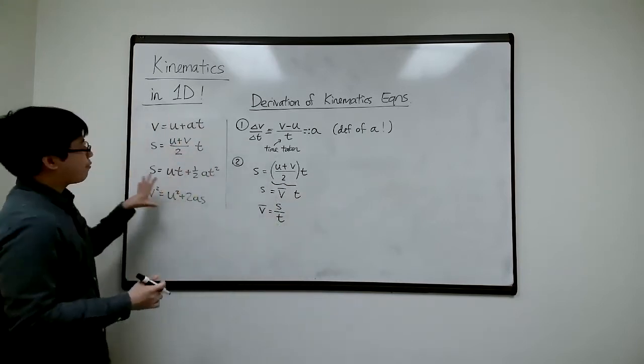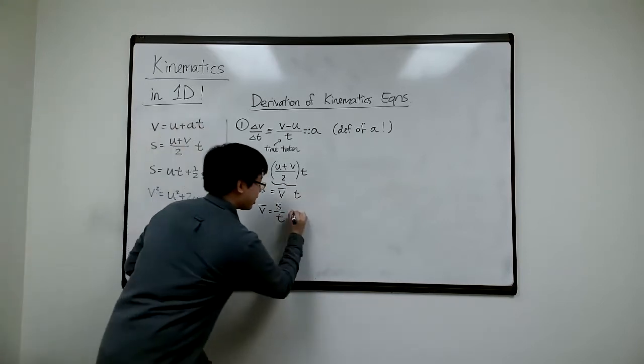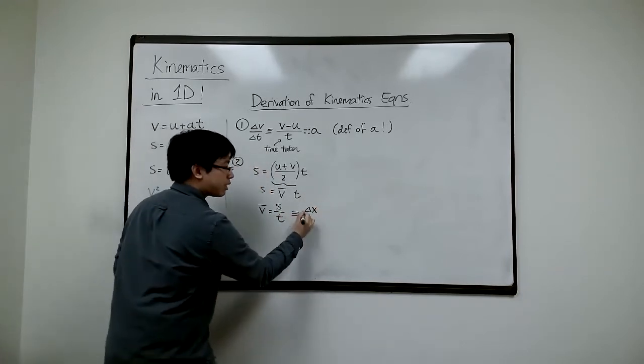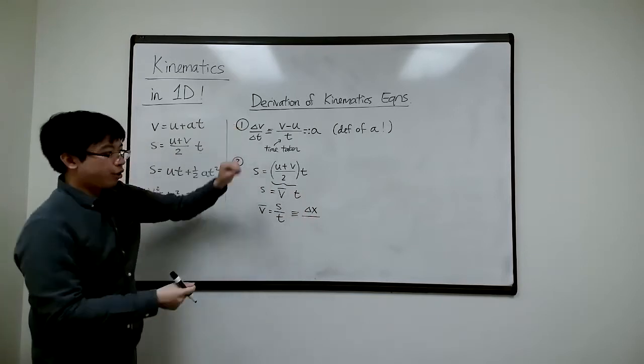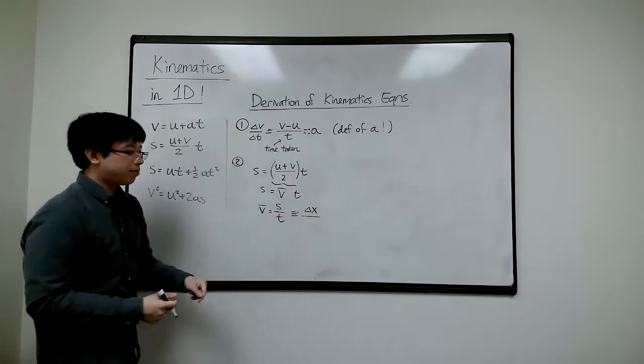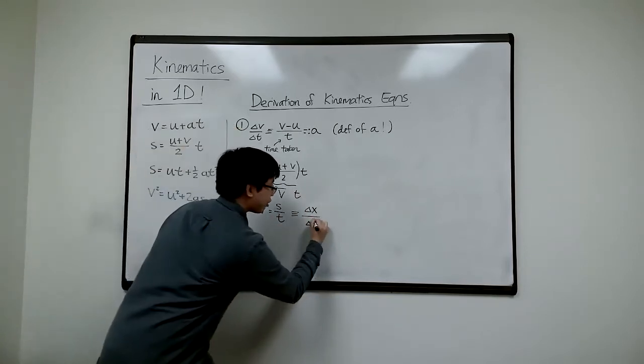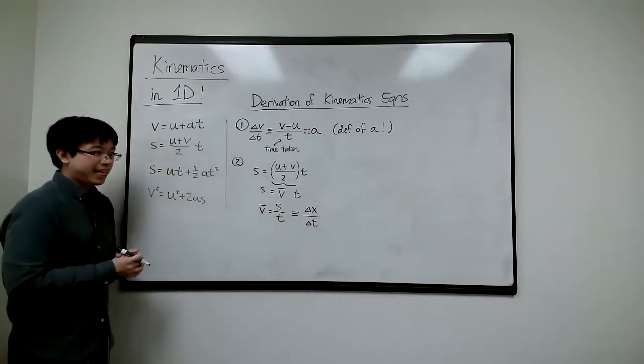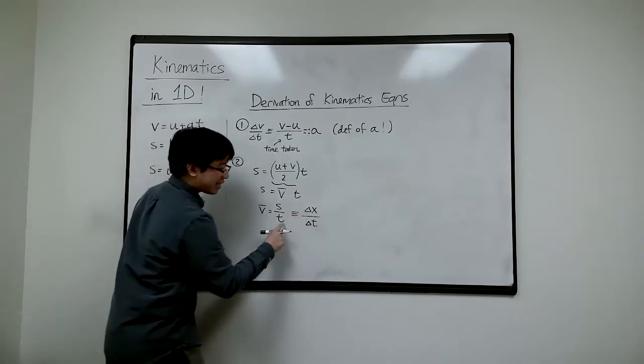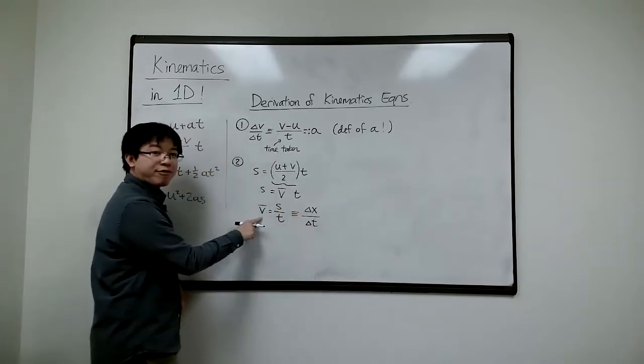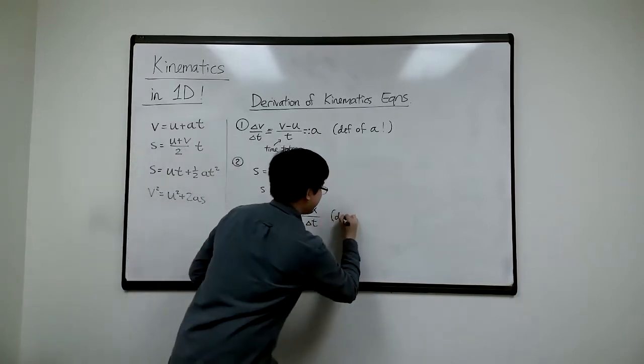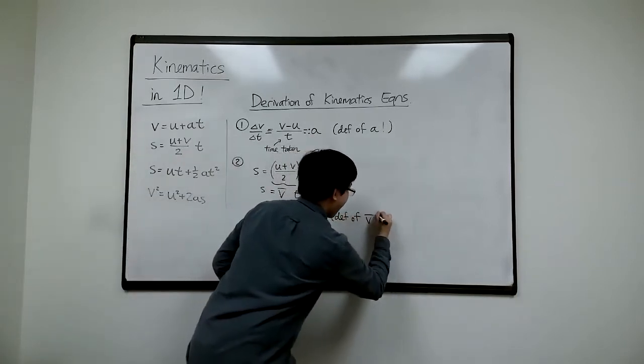If we use the SUVAT variables, this is the shorthand for delta X. That's displacement. Displacement is the change in position. If you go from X initial to X final, that's changing position. And T is our shorthand in the SUVAT scheme and the SUVAT approach, it's a shorthand for delta T is the time taken. So that's S, that's T, that's average velocity. That's nothing but just the definition of average velocity.